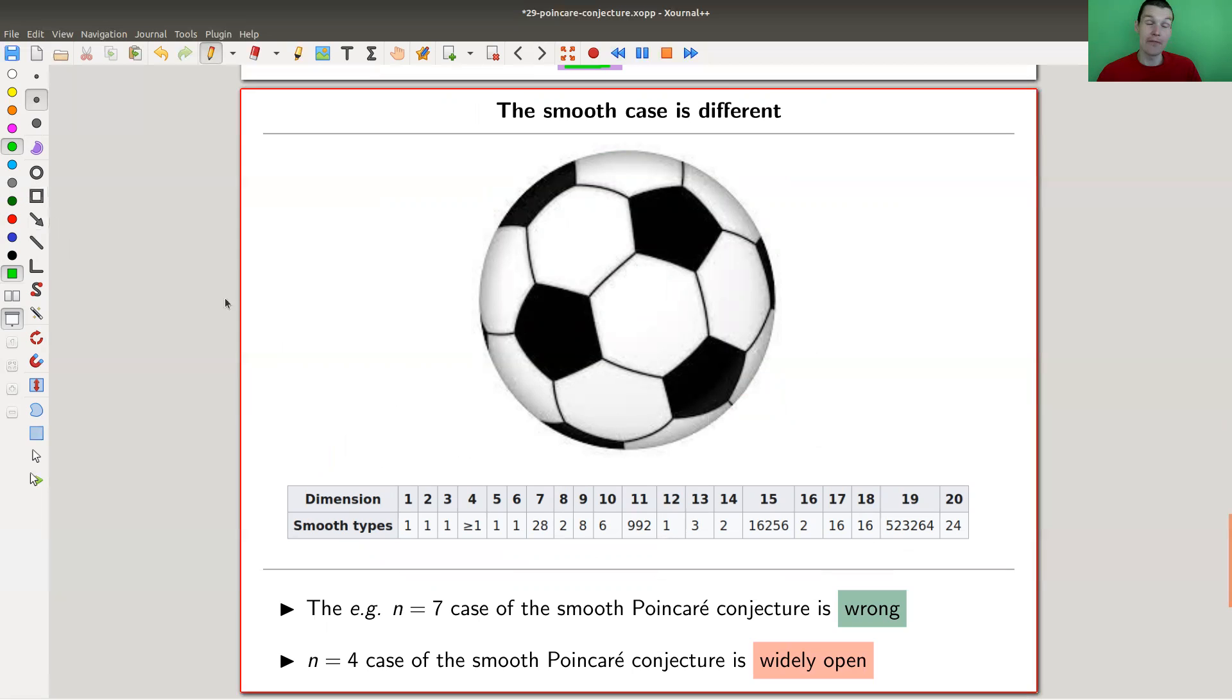A very famous paper, this time by Milnor, also roughly around the 60s, showed that the smooth version is wrong for n bigger than 7. It gets pretty ridiculous when n=7 - seven dimensions, there are 28 different smooth structures on the sphere.